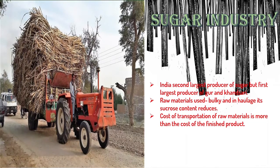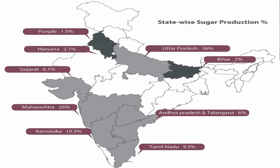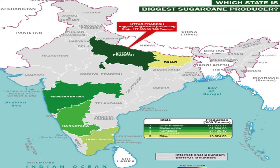Most of the sugar mills are located in the states of Uttar Pradesh, Bihar, Maharashtra, Karnataka, Tamil Nadu, Andhra Pradesh, Gujarat, Punjab, Haryana, and Madhya Pradesh. 60 percent of the sugar mills are located in Uttar Pradesh and Bihar.